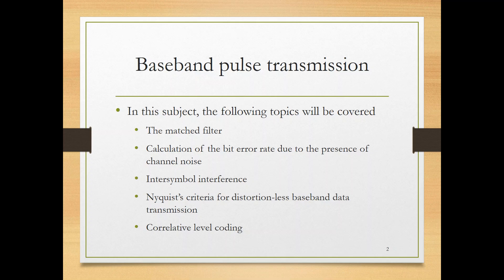Understand the phenomenon of inter-symbol interference, why it happens and how to overcome it. Nyquist criteria for distortion-less baseband data transmission and there is Nyquist transmission and there is sub-Nyquist, a non-Nyquist transmission. We need to understand both. And study also correlative level coding which is a technique used to overcome inter-symbol interference.